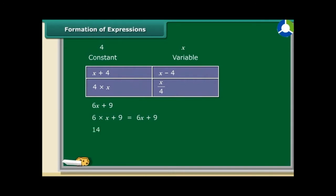Similarly, 14y minus 30 is obtained by first multiplying y by 14 and then subtracting 30 from the product. So, children, you see these expressions were obtained by combining variables with constants. You can also obtain expressions by combining variables with themselves or with other variables.